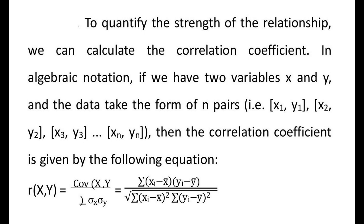To quantify the strength of the relationship, we can calculate the correlation coefficient. In algebraic notation, if we have two variables x and y and the data is taken in the form of n pairs (x1,y1), (x2,y2), ..., (xn,yn), then the correlation coefficient r(x,y) equals the covariance of x and y divided by σx·σy. This can be expanded as: summation of (xi − x̄)(yi − ȳ) divided by the square root of [summation of (xi − x̄)² × summation of (yi − ȳ)²].